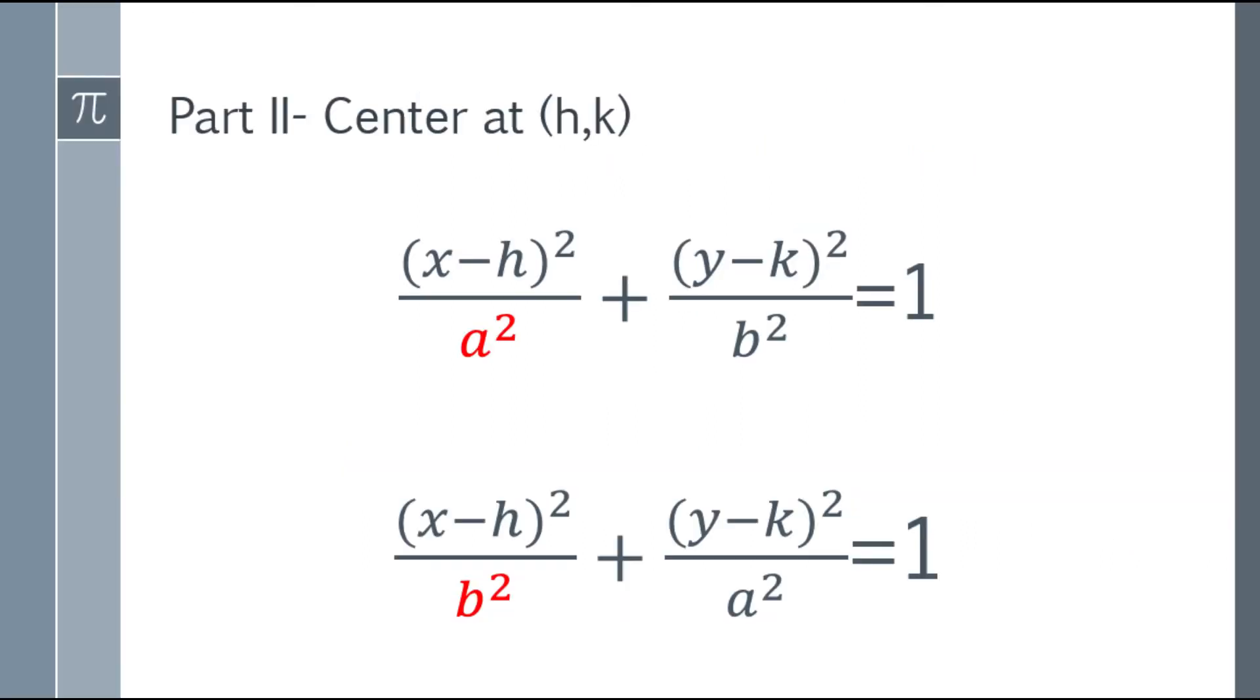So the previous video is ellipse at center at 0,0. Now we're at h,k, which is when the center is not at the origin. So we have two equations. The first one is the quantity x minus h square over a square plus the quantity y minus k square over b square equals 1. And the second equation is the quantity x minus h square over b square plus the quantity y minus k square over a square equals 1.